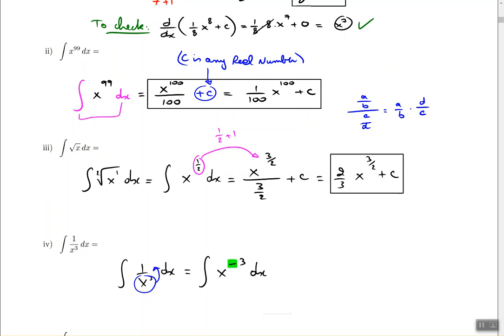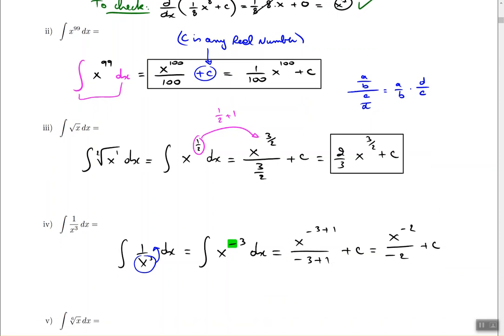Then I can add 1 to the exponent and divide by the same thing. So x to the power of negative 3 plus 1 divided by negative 3 plus 1 and then plus c. By the way this is the same thing as x to the negative 2 divided by negative 2 plus c. And sometimes people prefer to write this as 1 divided by negative 2 x squared plus c. So basically they take the exponent that was negative and they bring it back to the denominator to make everything nice and positive.